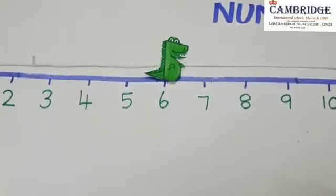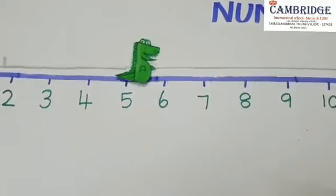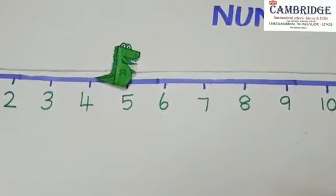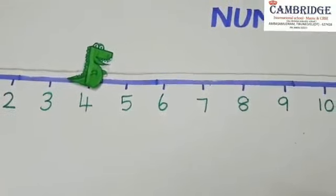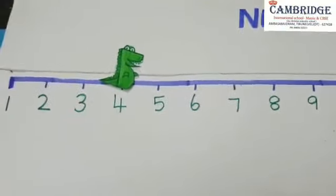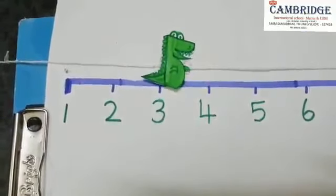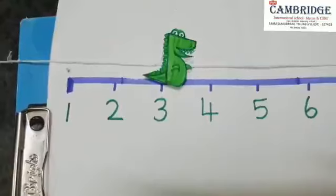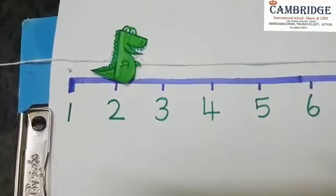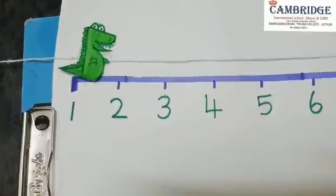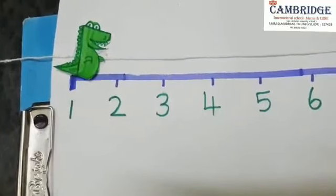Before 8, 7. Before 7, 6. Before 6, 5. Before 5, 4. What comes before 4? 3. Before 3, 2.